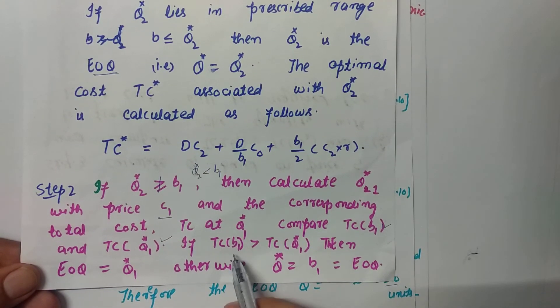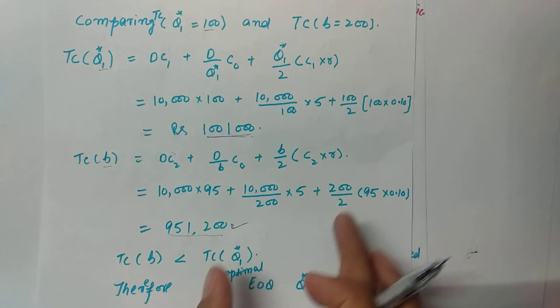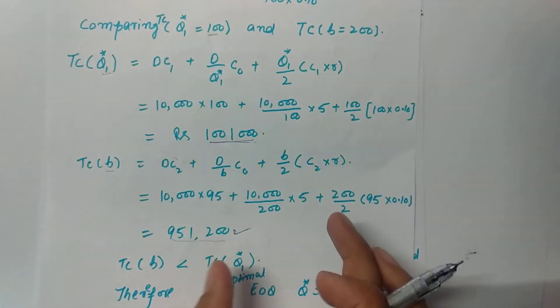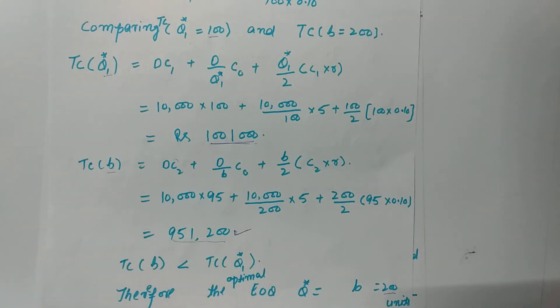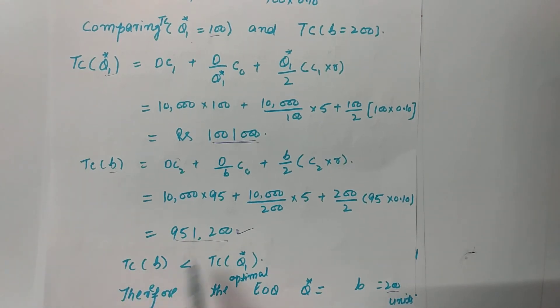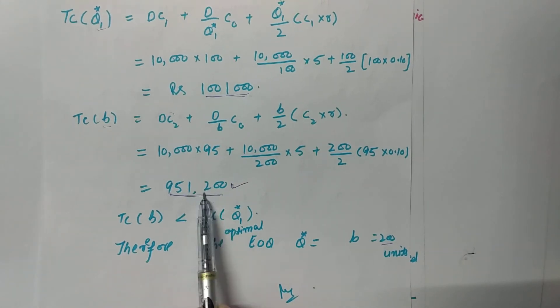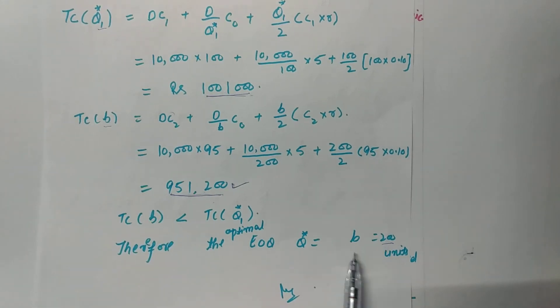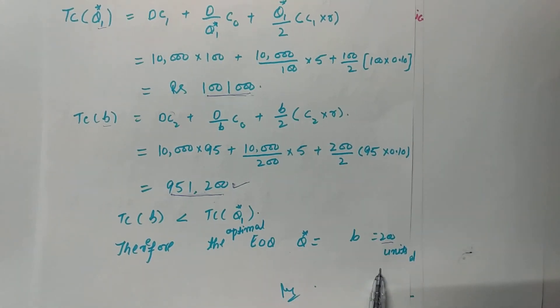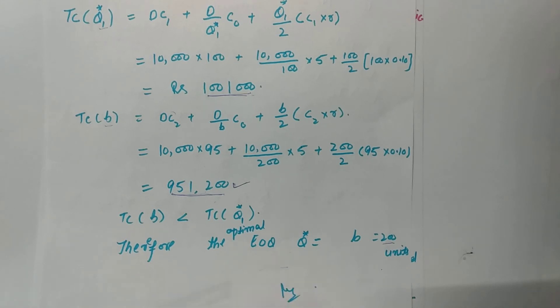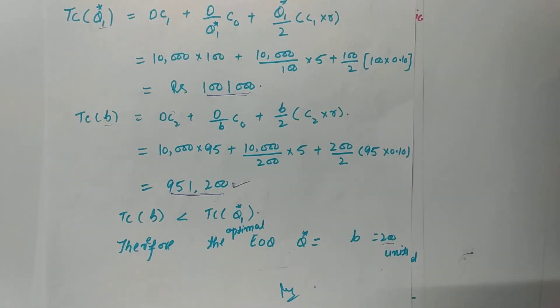We now compare the two total costs. The minimum total cost corresponds to B1 = 200 units. Since the cost at B1 is less than the cost at Q*1, the optimal quantity is the one yielding the least cost. Therefore, the Economic Order Quantity is 200 units. If you like this video, please subscribe to my channel and share it. Thanks for watching.